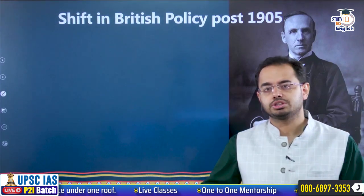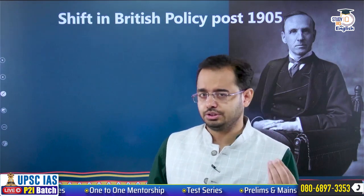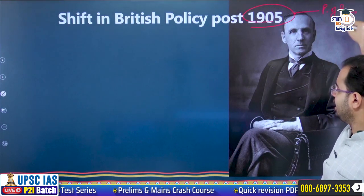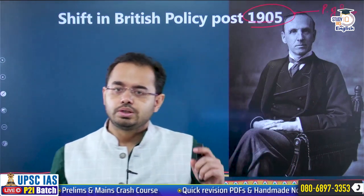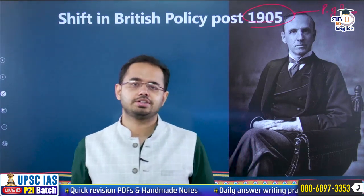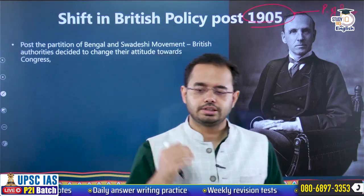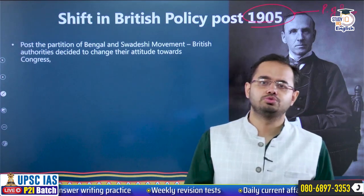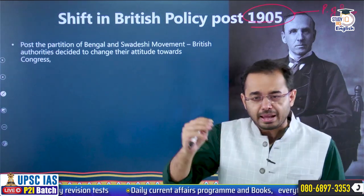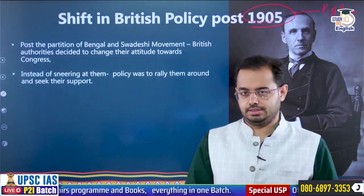Let us go to the shift in policy that Britishers had towards Indian National Congress after 1905. After 1905 — the year of partition of Bengal — Lord Morley was becoming Secretary of State and Lord Minto was becoming Viceroy. These people shifted policy towards the INC. Post the Swadeshi movement of 1905 to 1907, Britishers decided they needed to placate the Congress, pacify it, and bring some part of Congress with themselves. That is where moderates stood.